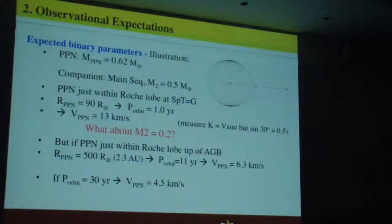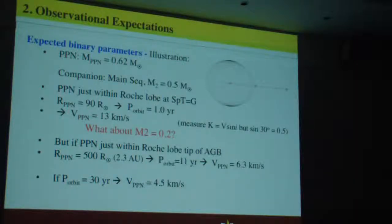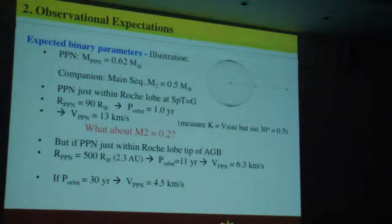But if the proto-planetary nebula is just within its Roche lobe at the tip of the AGB, then the companion has to be much further away to have not interacted with the atmosphere while it was at the AGB tip. That puts the stars much further apart — about 2.3 AU — giving an orbital period of 11 years, and consequently reducing the velocity semi-amplitude. For a 30-year orbit, the velocity semi-amplitude would be about 4.5 kilometers per second.